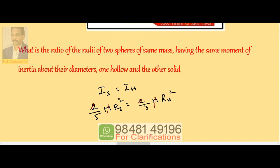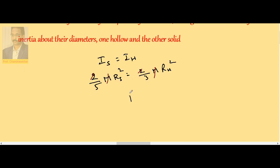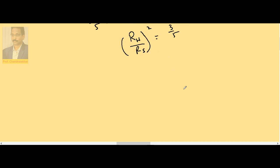Therefore hollow by solid, R H by R S whole square is equal to three by five, or radius of the hollow sphere by radius of the solid sphere is root over three is to five.